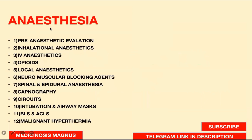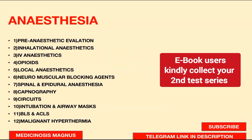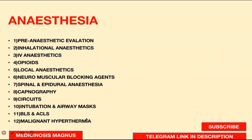For anesthesia, the important topics are: pre-anesthetic evaluation including various scoring systems like Mallampati scoring and when to stop medicines; inhalational anesthetics, IV anesthetics, opioids, local anesthetics, neuromuscular blocking agents, spinal and epidural anesthesia, capnography, the various grafts and circuits including important circuit types A and B, intubation and airway masks and types used, BLS and ACLS, and malignant hyperthermia.